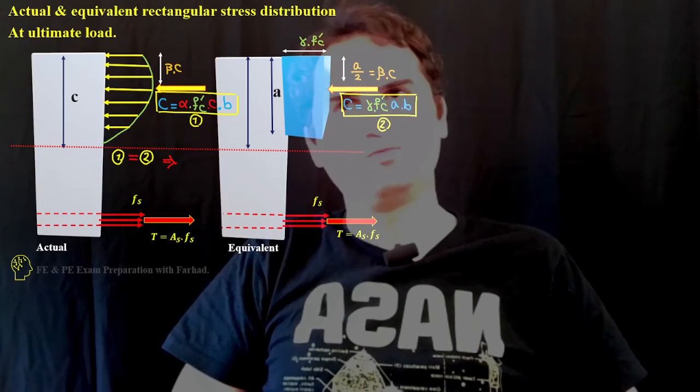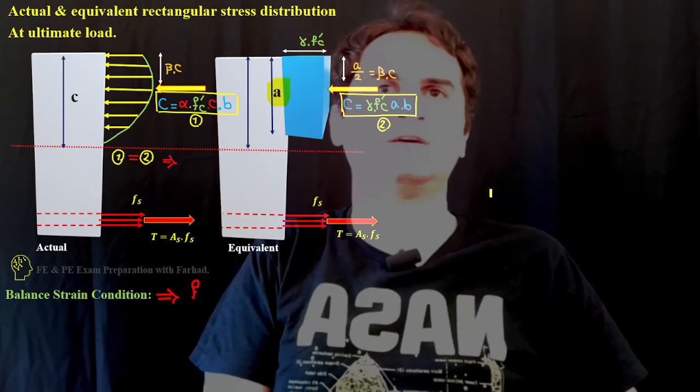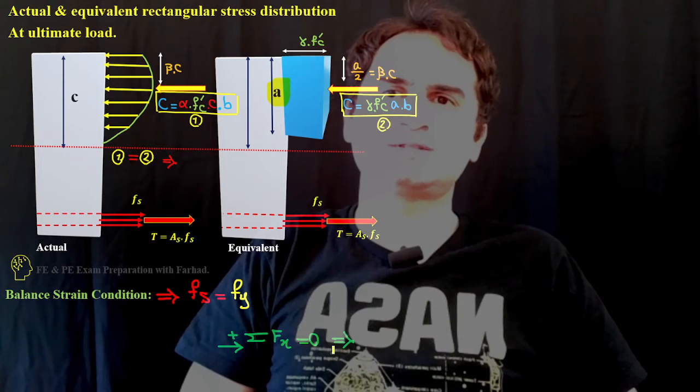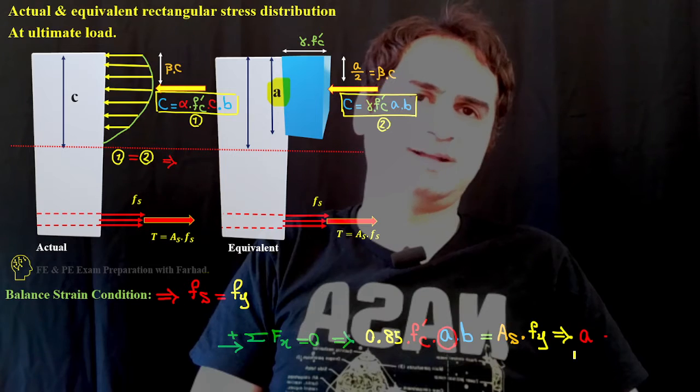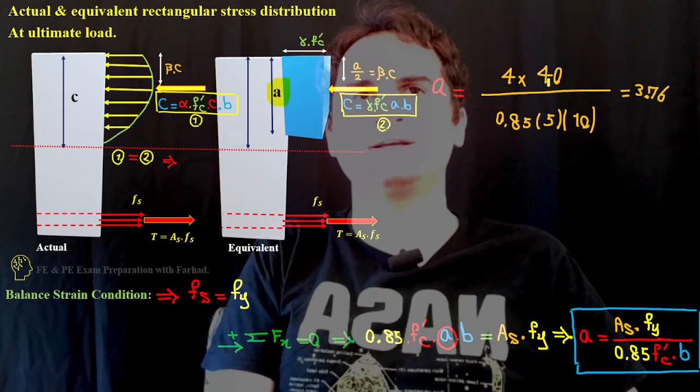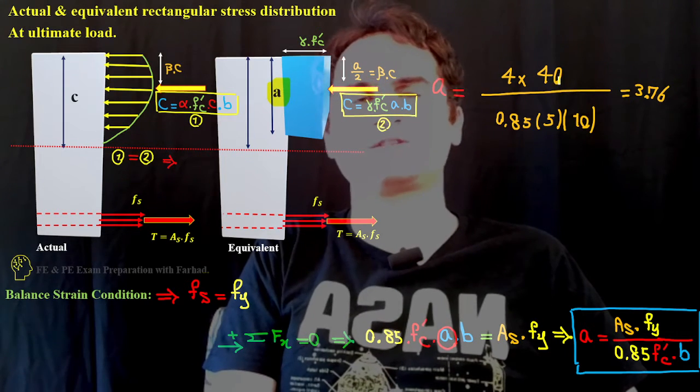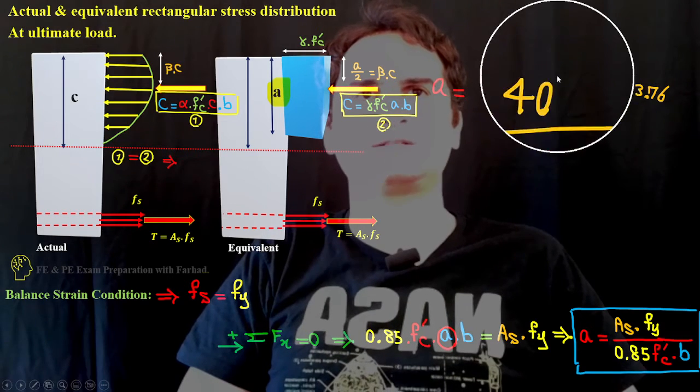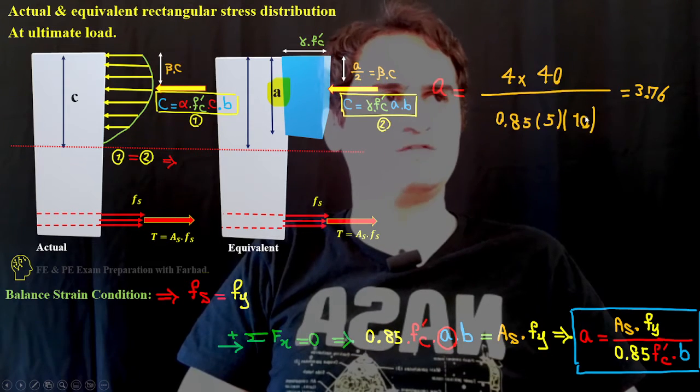Then we move to solve the problem. The second part is calculation of height of Whitney stress block. Summation of forces equals zero, steel yields, and this gives us a. a equals area of steel times f_y over 0.85 times f'_c times b. That's 40 over 5 times 10 inches, giving us a equal to 3.76 inches.